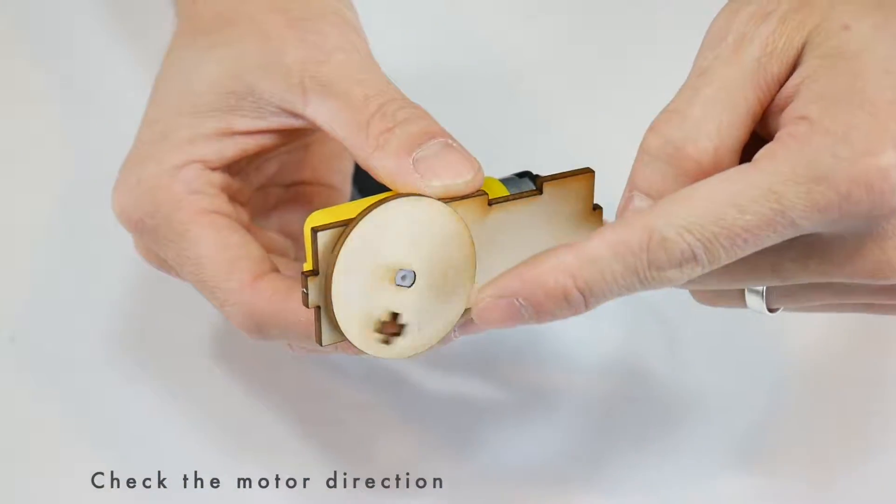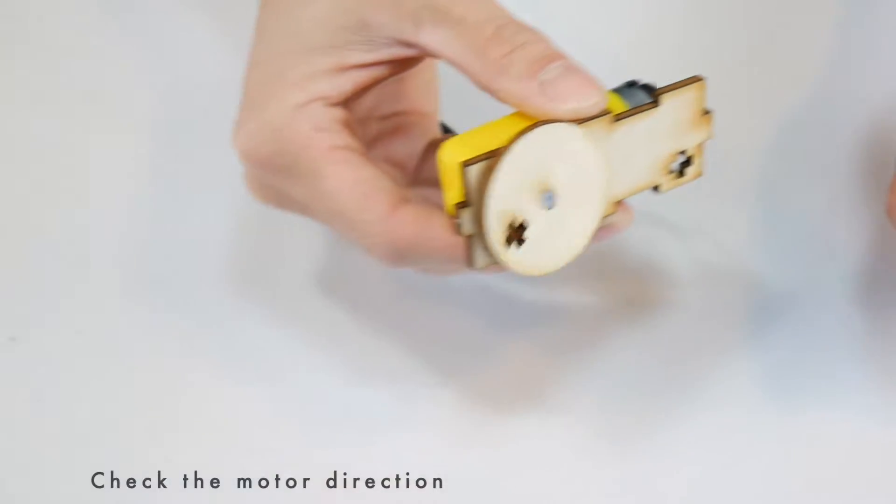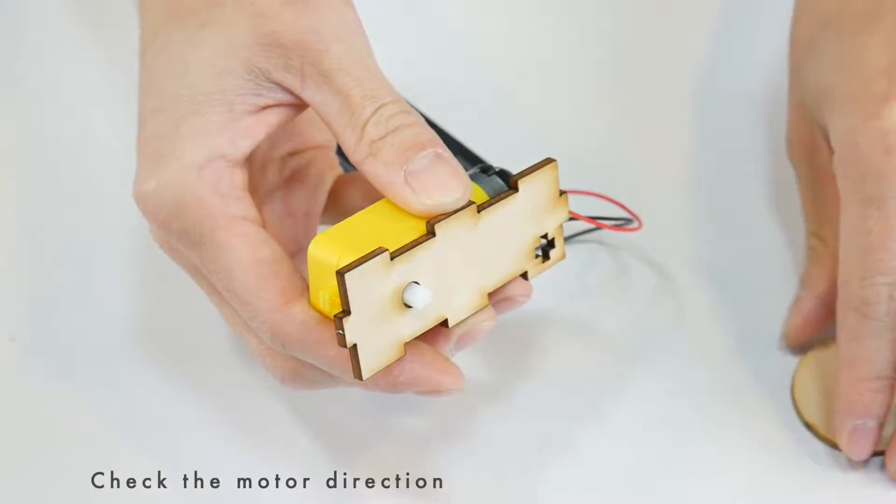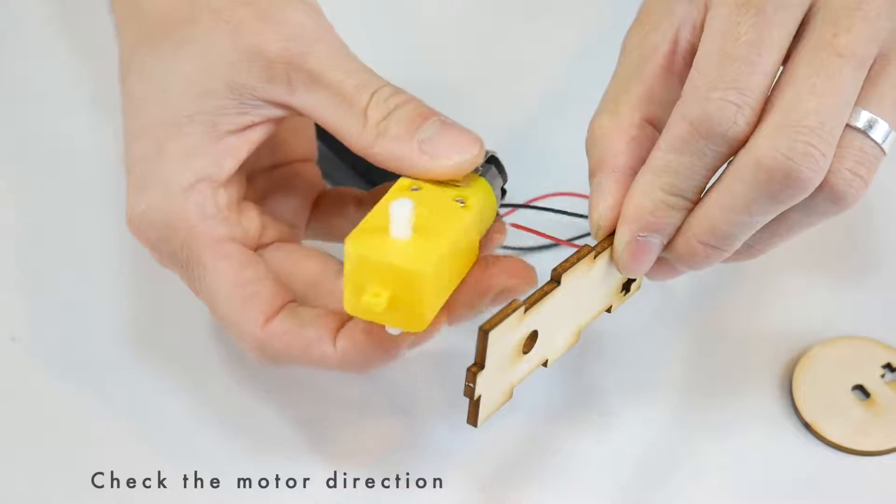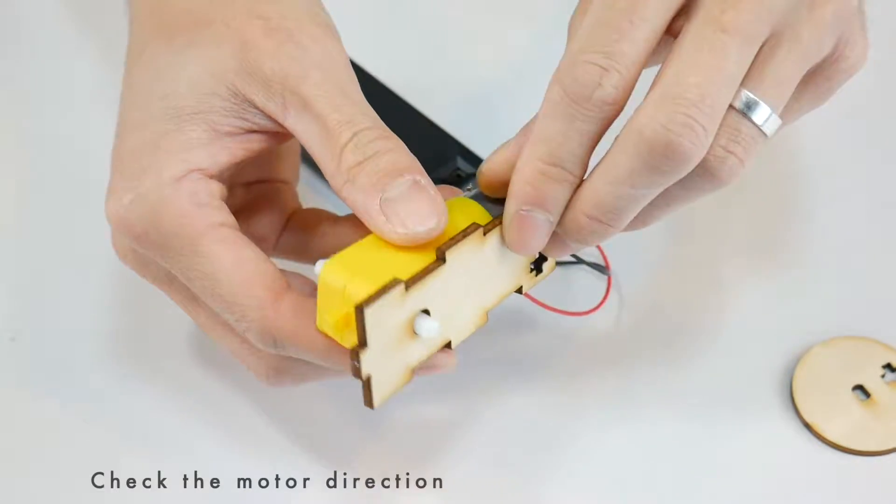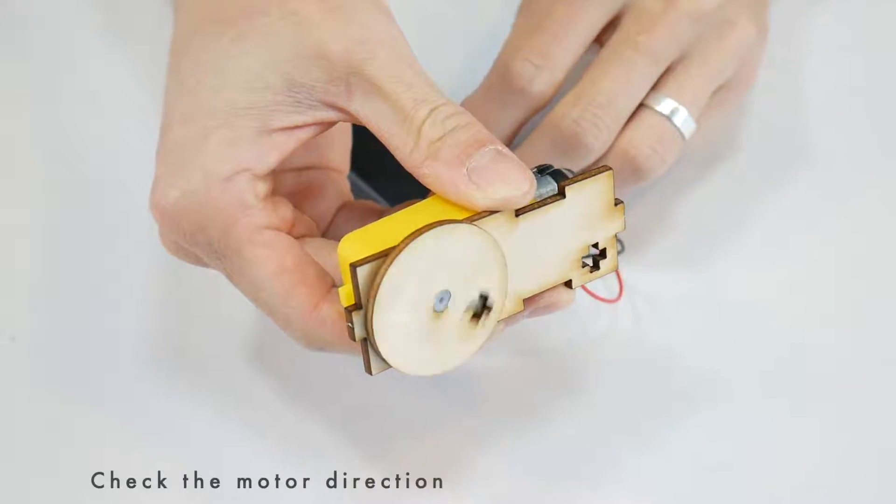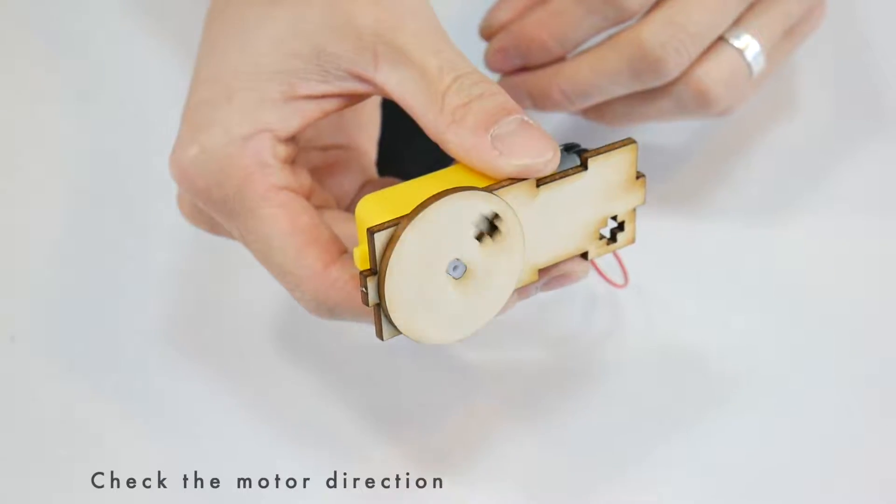Right now, the motor is spinning in a way that's going to make the robot go backwards. So to fix that, we're just going to flip the motor around like this. Now try it again. And you can see that the wheel is turning in the correct direction.